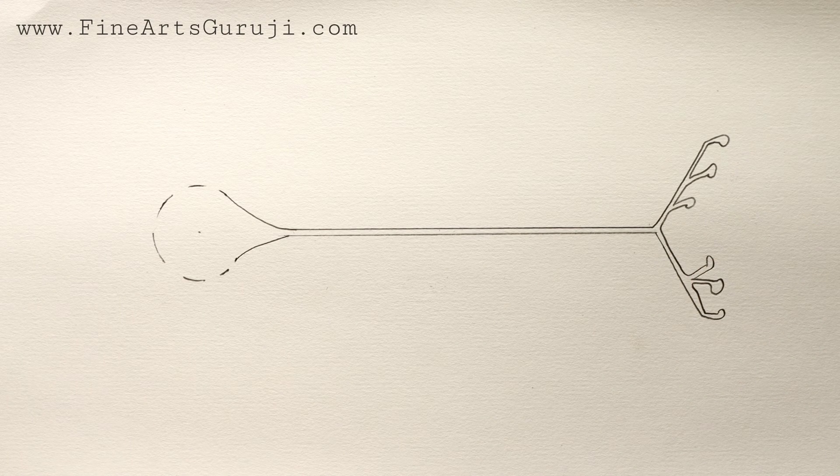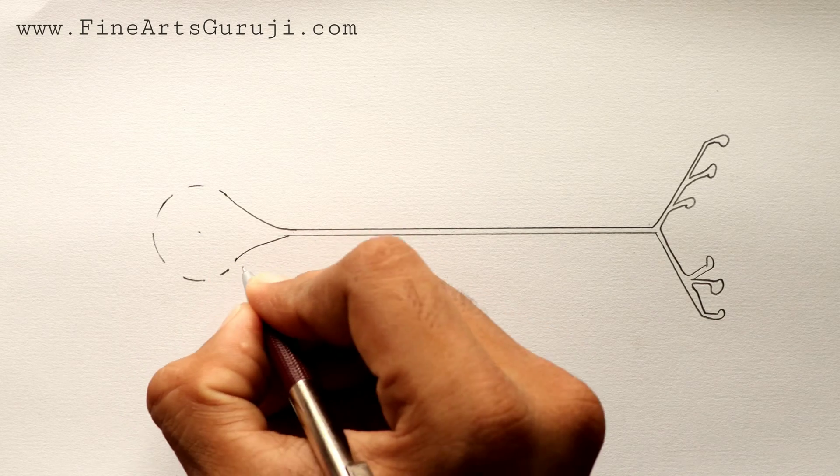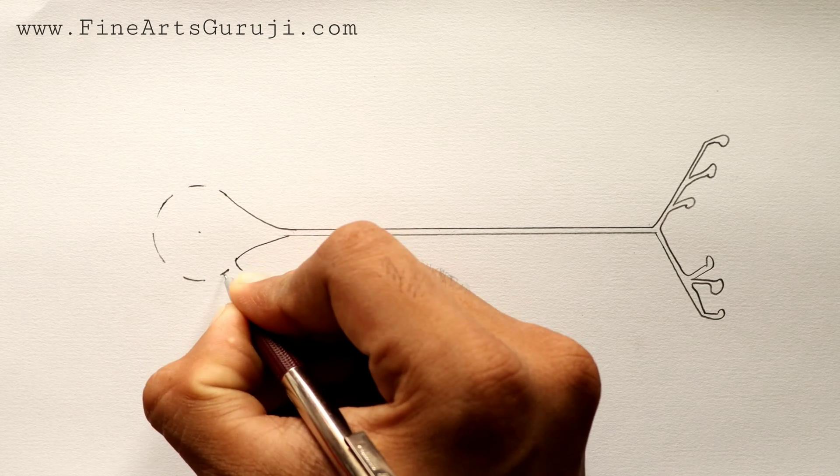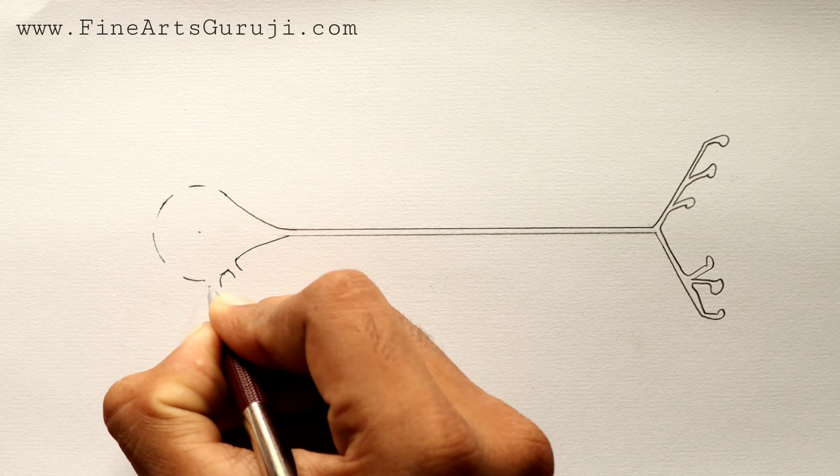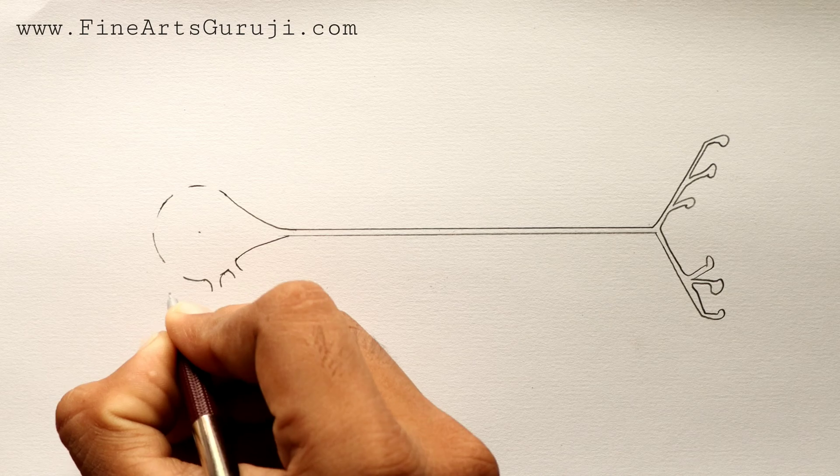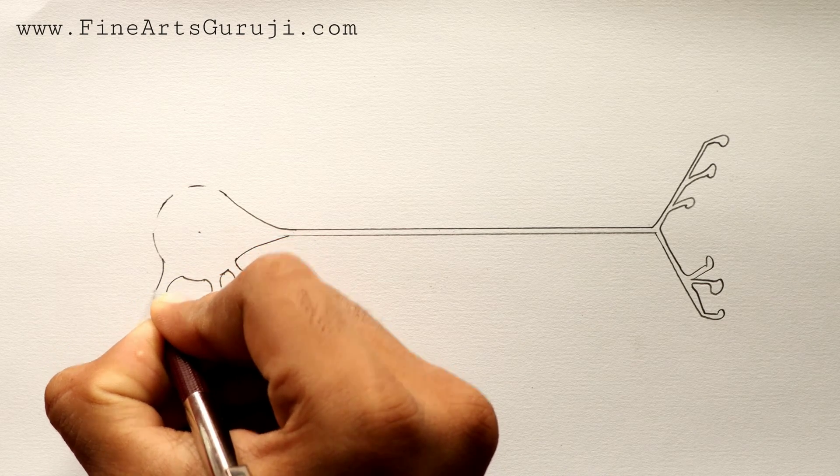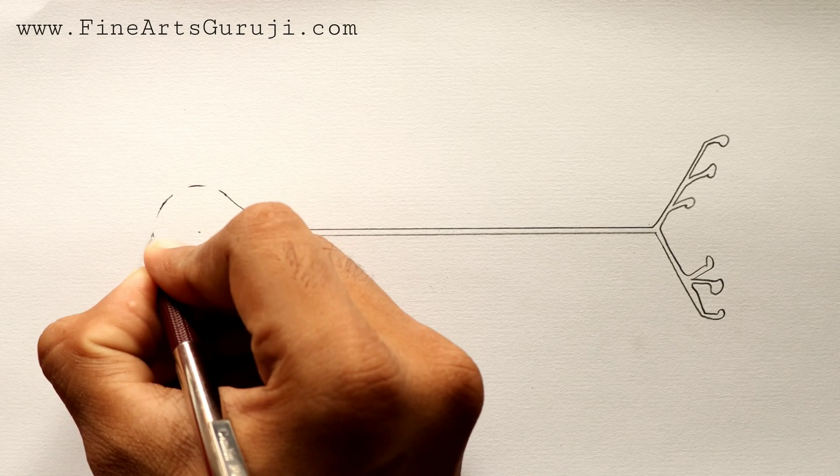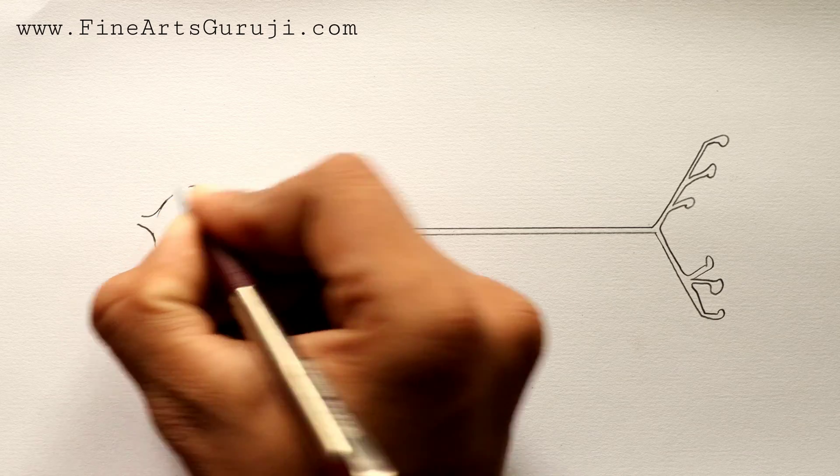After completing this axon terminal and synaptic knob, we come to dendrite. Each and every gap we have to make same. I am using here my mechanical pencil of 0.5. If you don't know about mechanical pencil, then please let me know in the comment section. I will make a video on it.